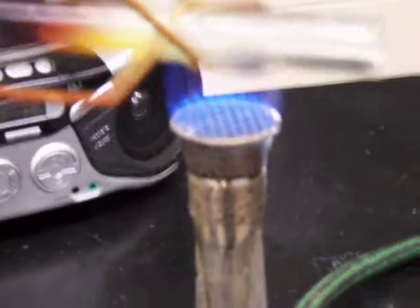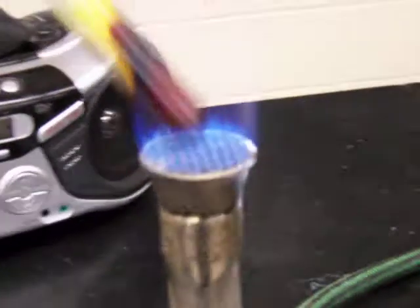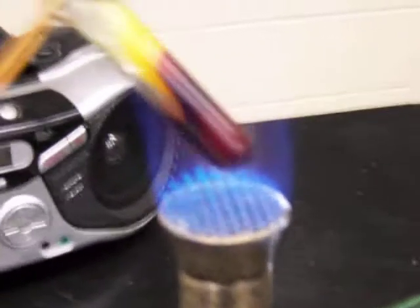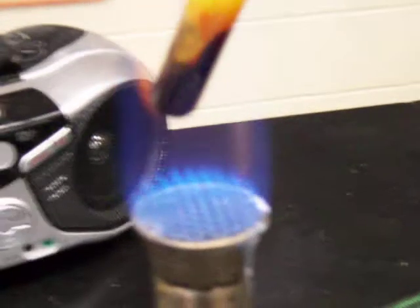Here's our very viscous red sulfur which cannot be poured out of the test tube. Continue heating until it starts to boil. We'll have black sulfur.